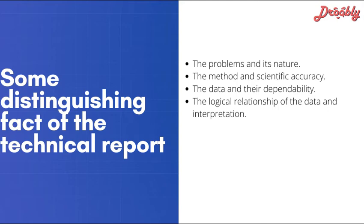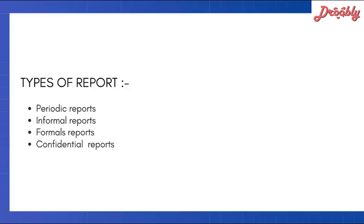Moving on to the types of reports: first is periodic reports, second is informal reports, third is formal reports, and the fourth and last is confidential reports. We are going to talk about all of these report types and their definitions in the next slides.